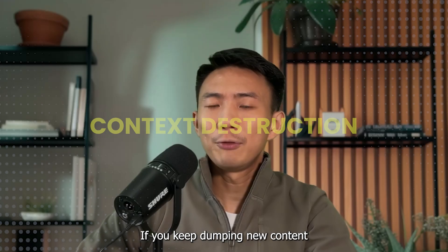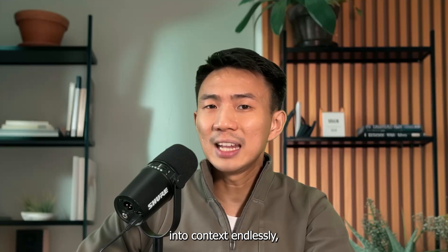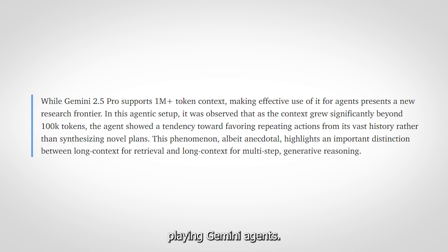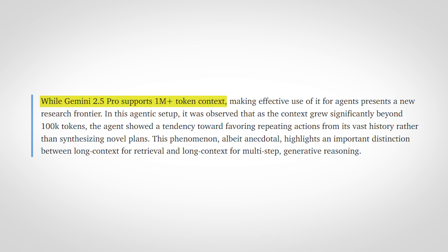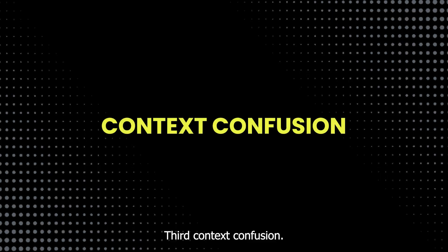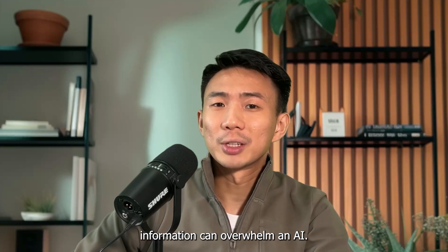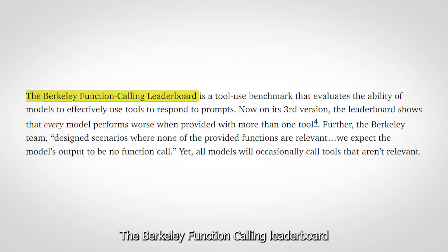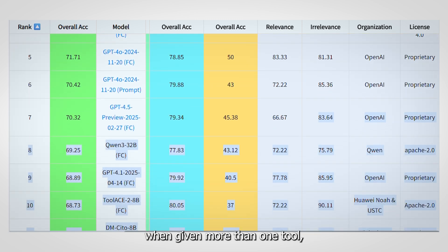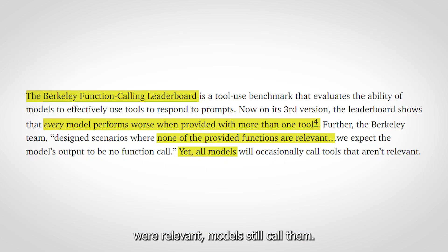Second: context distraction. If you keep dumping new content into context endlessly, the model starts overfitting to the backlog. That's what happened with the Pokémon-playing Gemini agent — even though Gemini 2.5 Pro supports more than a million token context, once the agent's history passed 100,000 tokens, it looped through past actions instead of planning ahead. Third: context confusion. Too many tools or irrelevant information can overwhelm an AI. The Berkeley function calling leaderboard shows this clearly — every model performed worse when given more than one tool. Even when none of the tools were irrelevant, models still called them incorrectly.